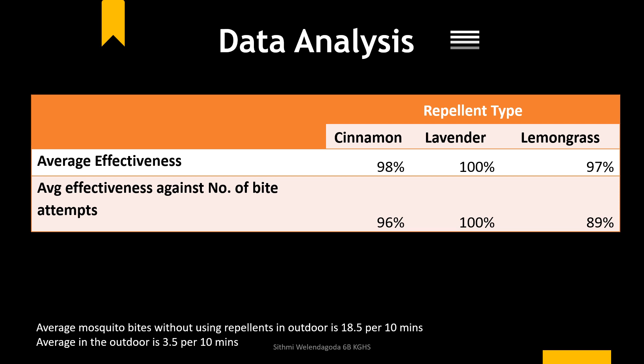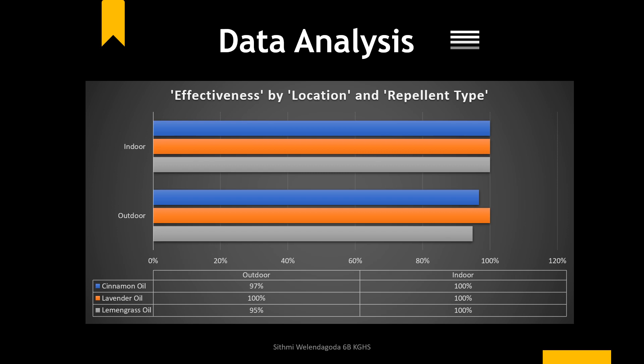According to these findings, lavender oil is much more effective than the other two oils, because it shows 100% effectiveness compared to the others. Here you can see a comparison between indoor and outdoor effectiveness. The findings clearly indicate that all these repellents are highly effective in indoor environments.